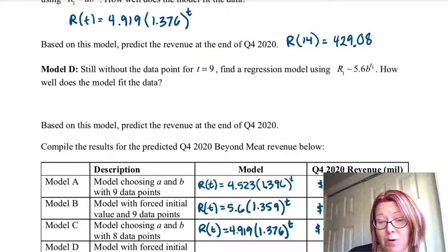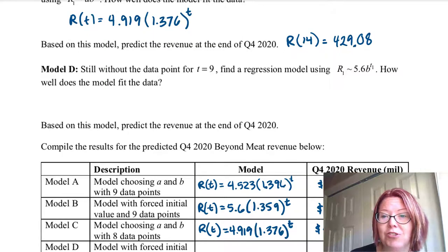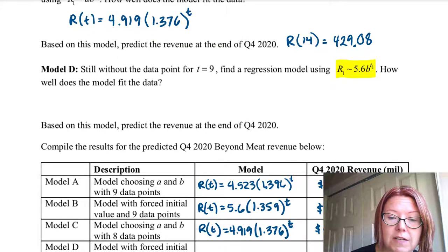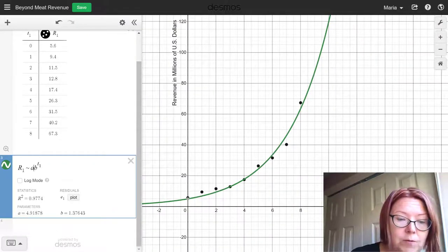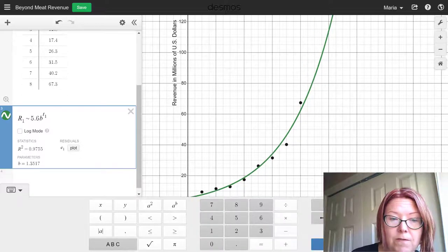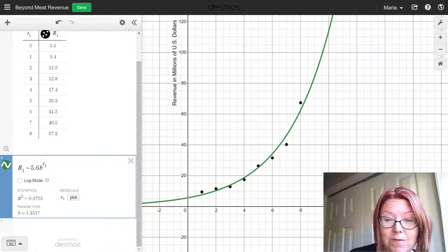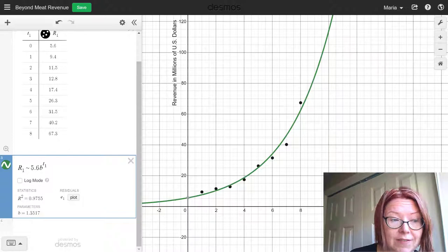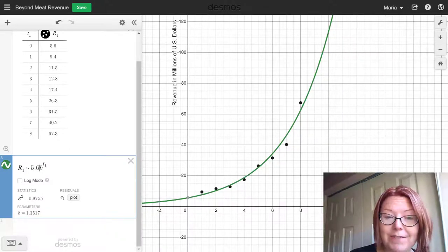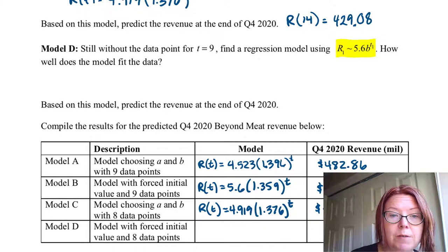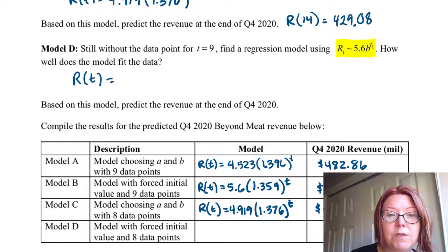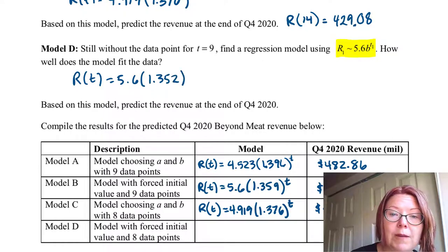Okay the final thing we're going to do is force the initial value on this eight data point model. So now we're going to just use the 5.6 instead of the A value. We'll run over to Desmos. Change that A value back to 5.6. So now we're forced through the initial value. There's only one parameter for the model to find and that's the growth factor. So it finds a growth factor of 1.3517 or simply 1.352. Put that in our notes. The model here for model D is R of t equals 5.6 left paren 1.352 right paren to the t.